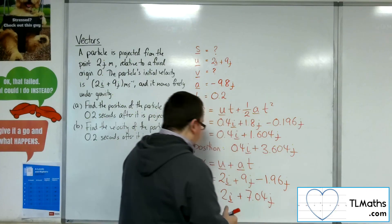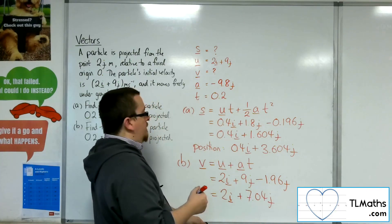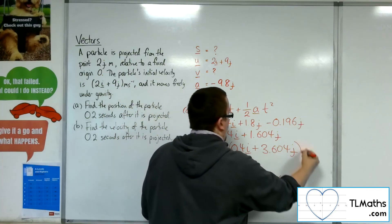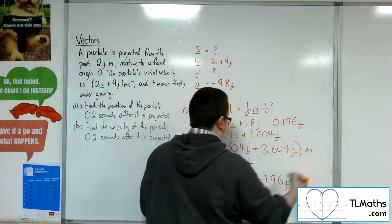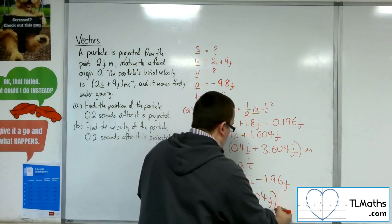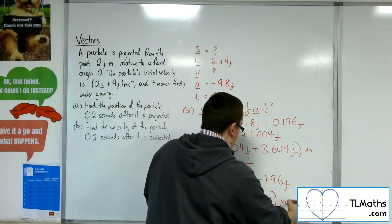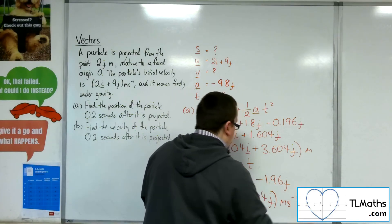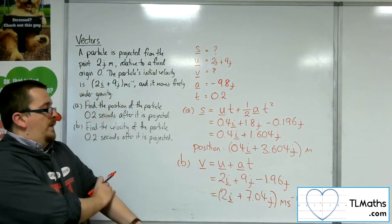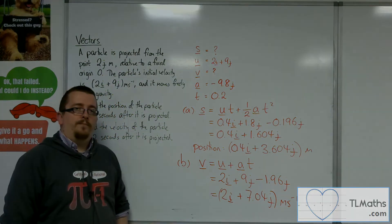So the velocity is 2i plus 7.04j — this will be in metres per second — and the position is in metres.